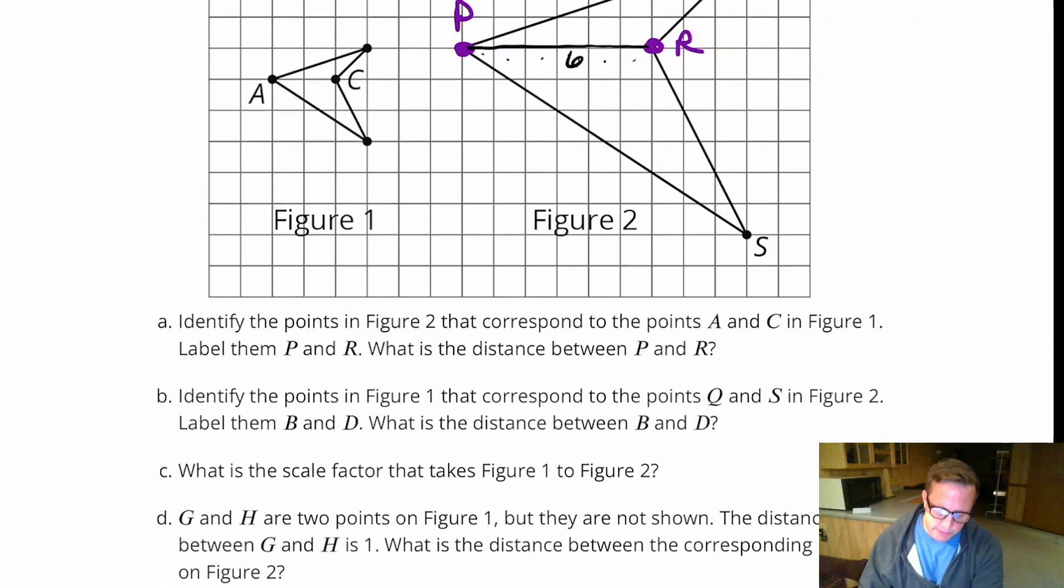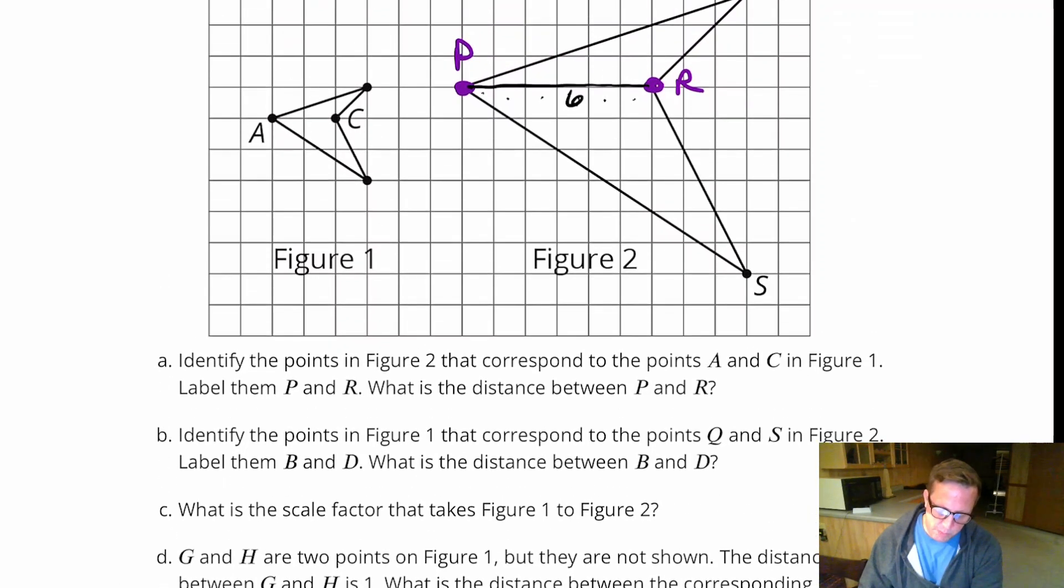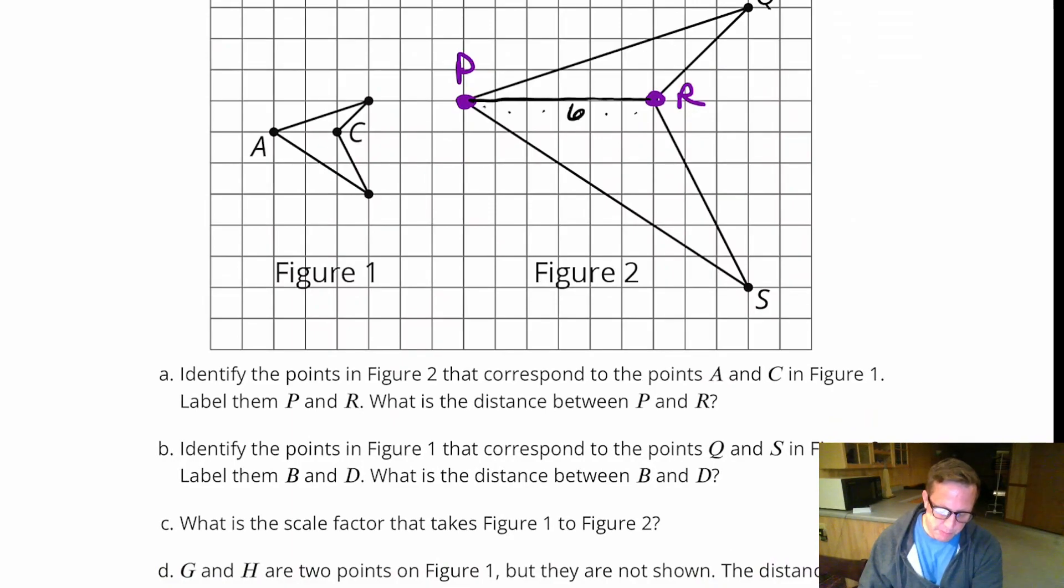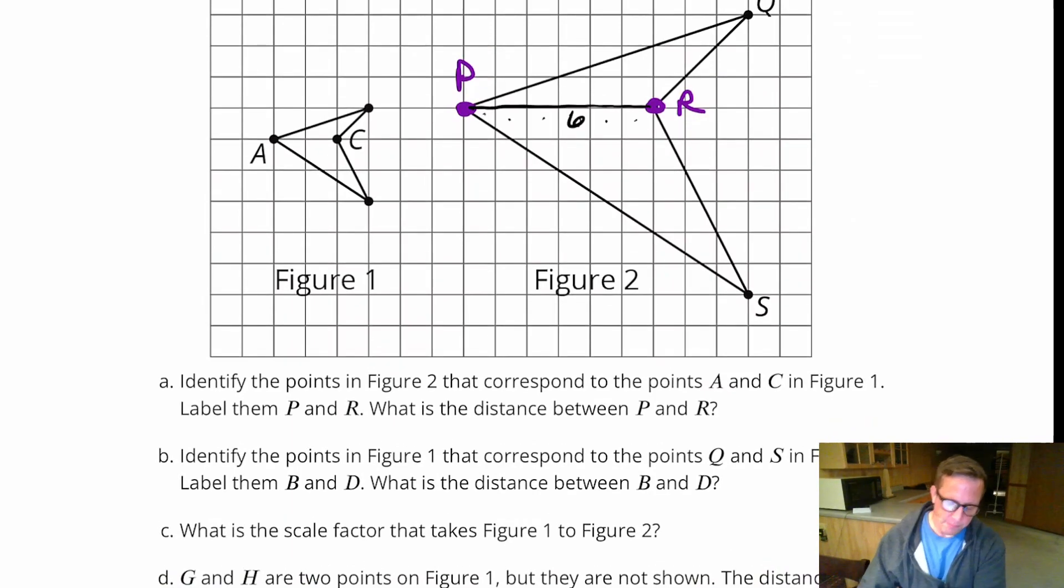Identify the points in figure one that correspond to Q and S in figure two. Label them as B and D. All right. So, Q. Right here. So, that's going to be, we're going to call this B.